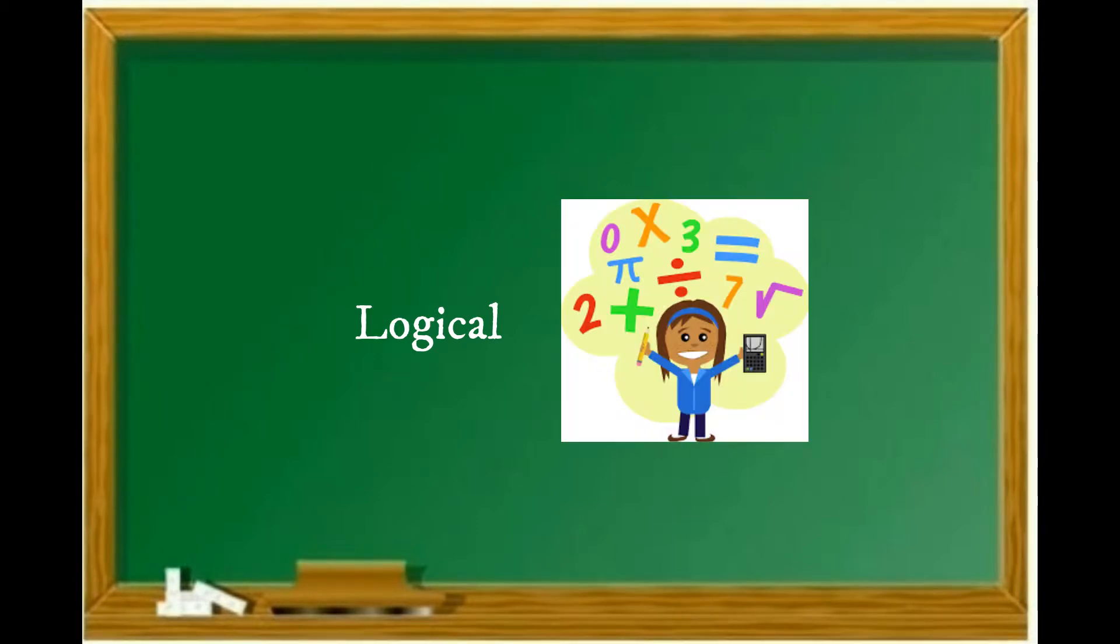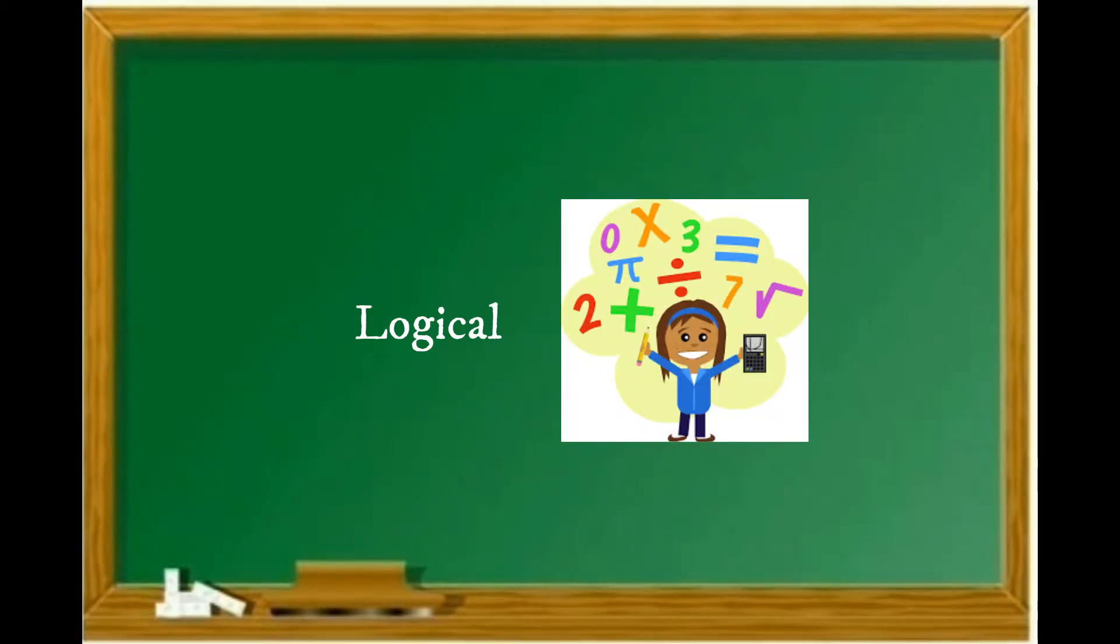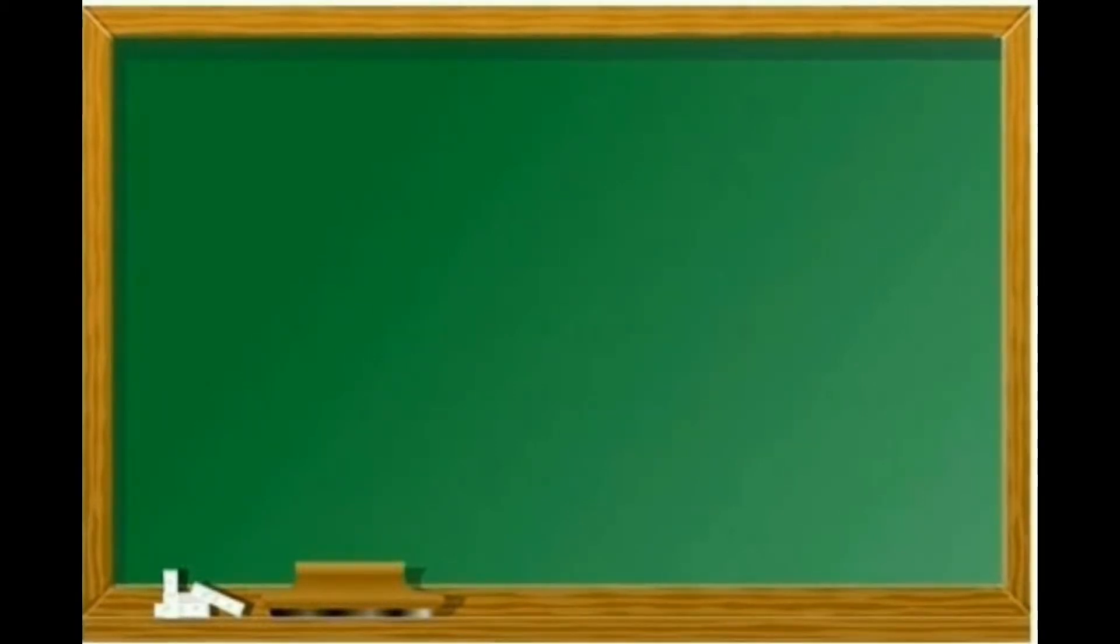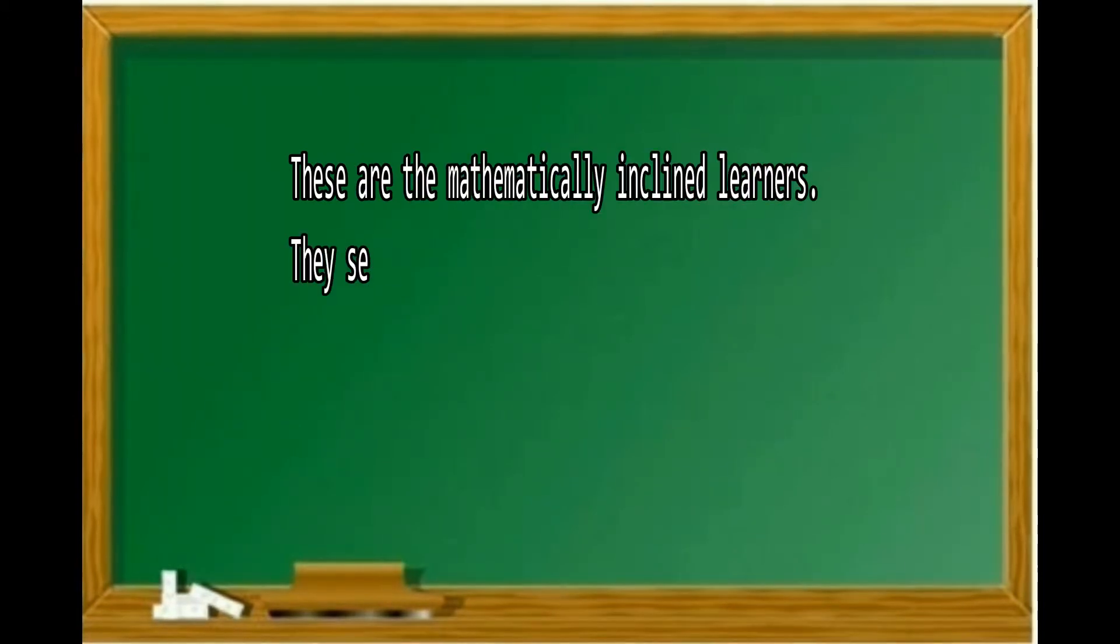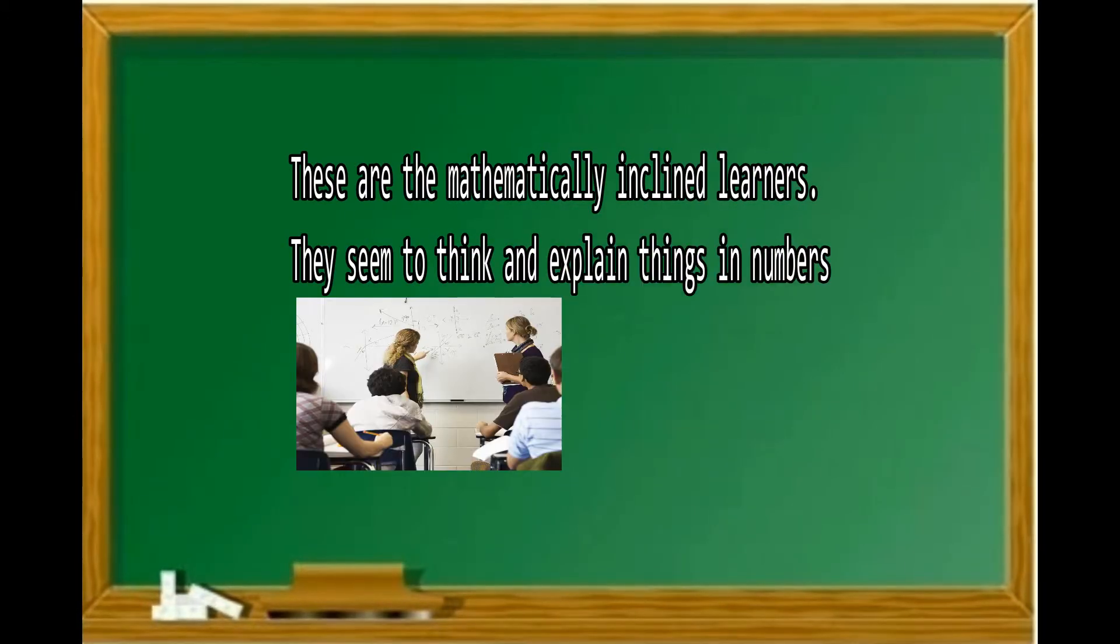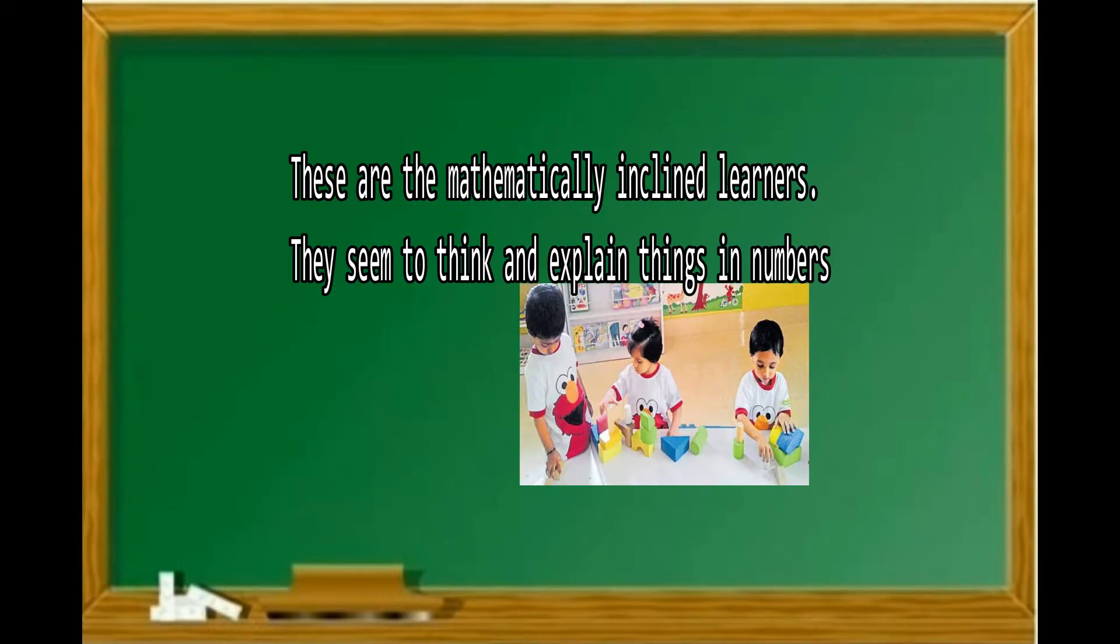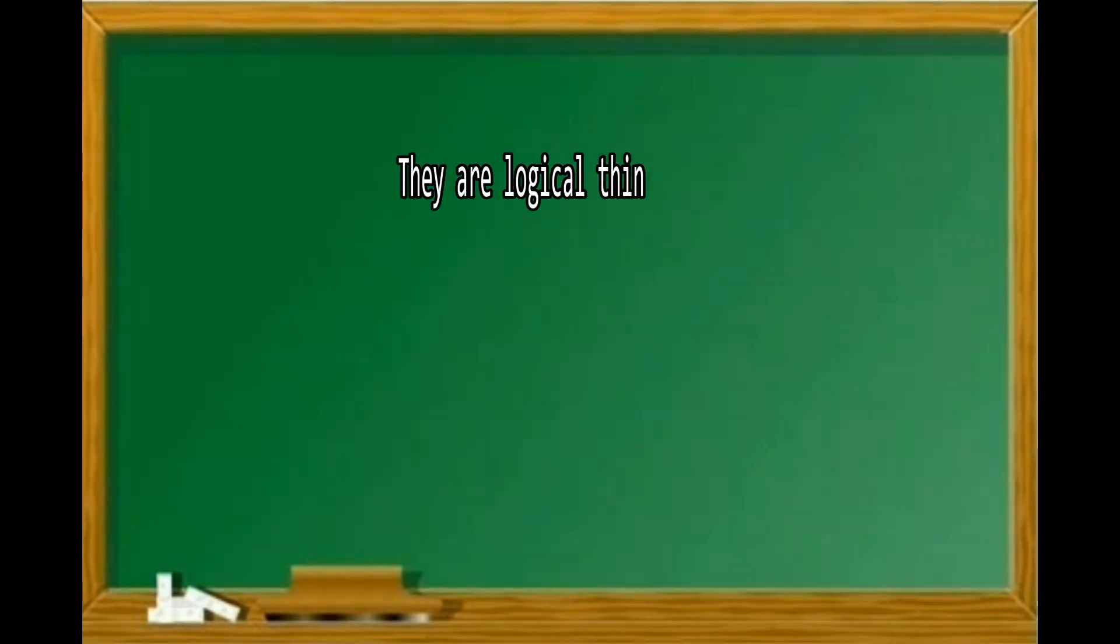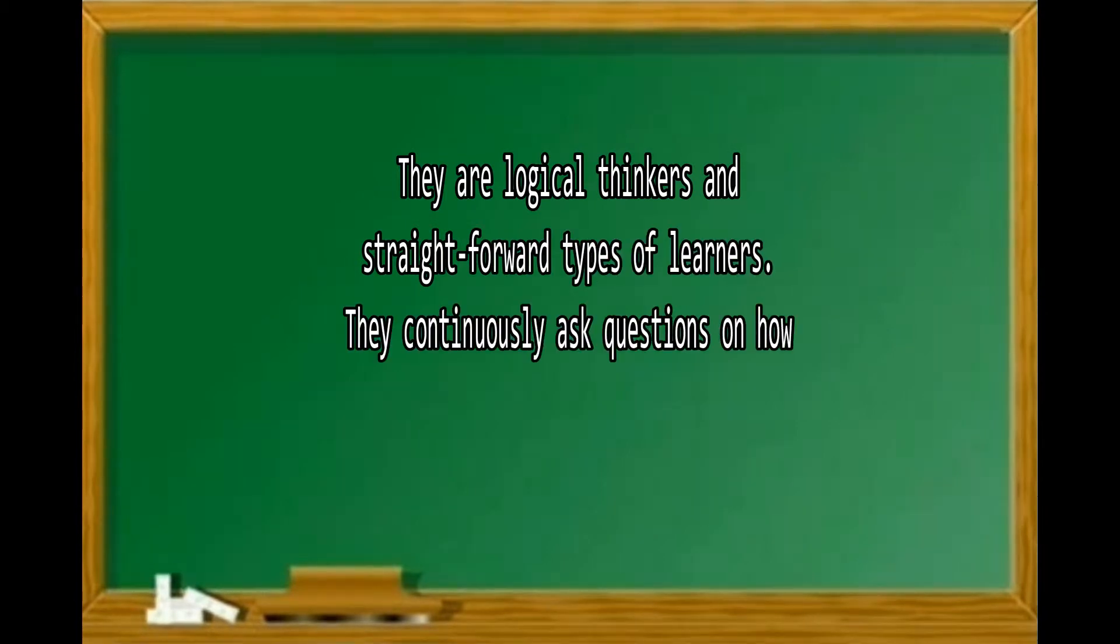Second is the Logical learner. These are the mathematically inclined learners. They seem to think and explain things in numbers. They are logical thinkers and straightforward types of learners.